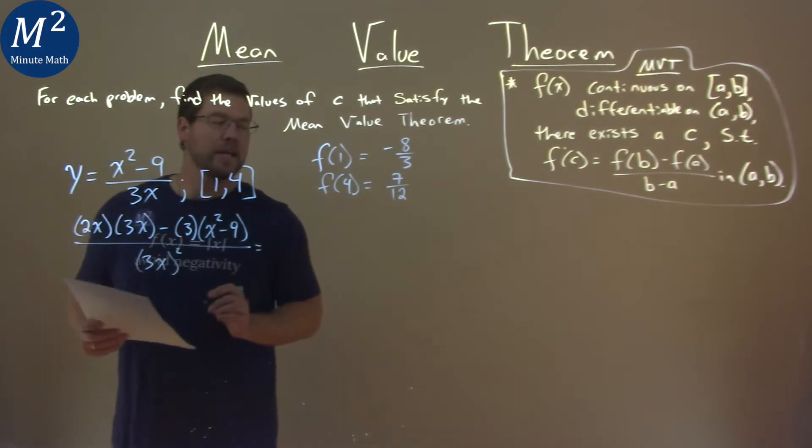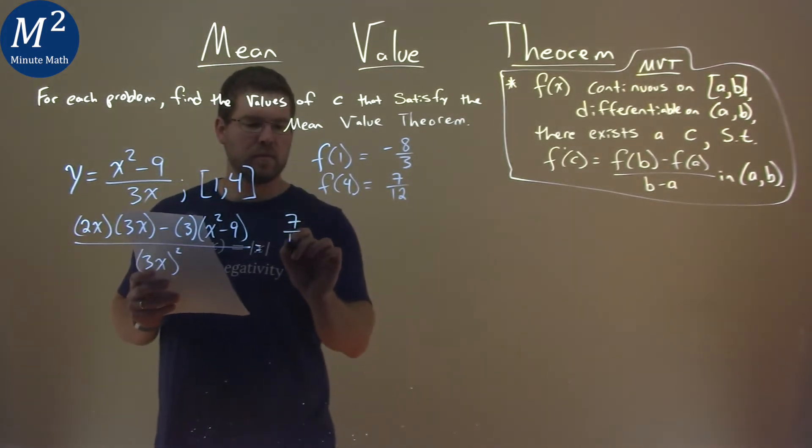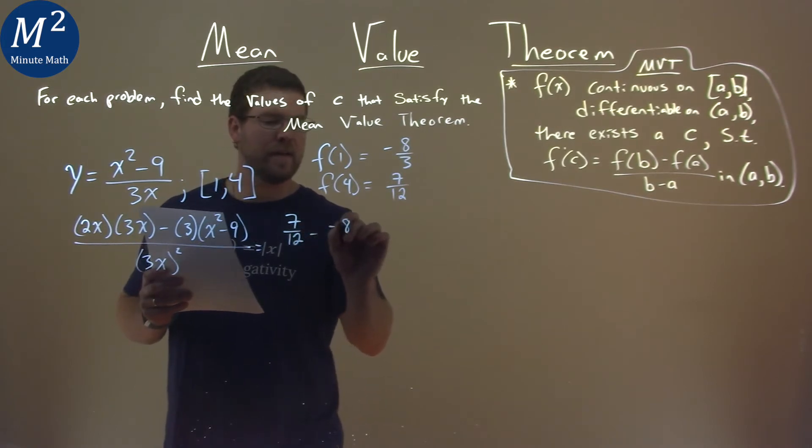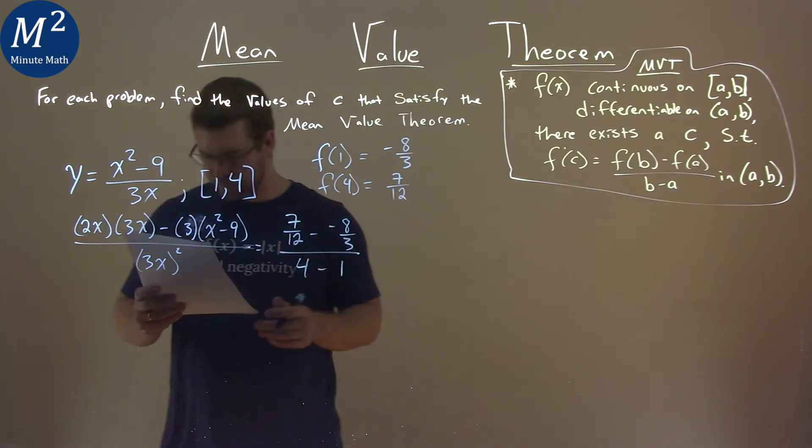And then we set that equal to f of b minus f of a, so 7 twelfths minus negative 8 thirds, over b minus a, 4 minus 1.